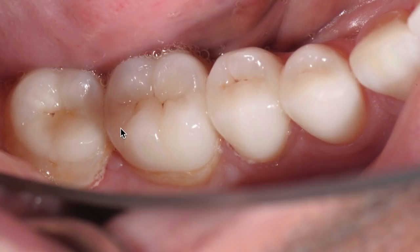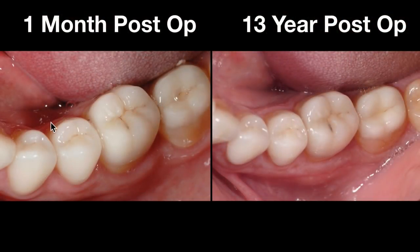These are feldspathic layered ceramics — they're not monolithic Emax or lithium disilicate; those are the same thing, or the older Empress type of material. These are just feldspathic layered ceramics. Here's the one-month post-op of the case, and here's the 13-year post-op of the case. It hardly looks any different. It's quite amazing, really nice to see.